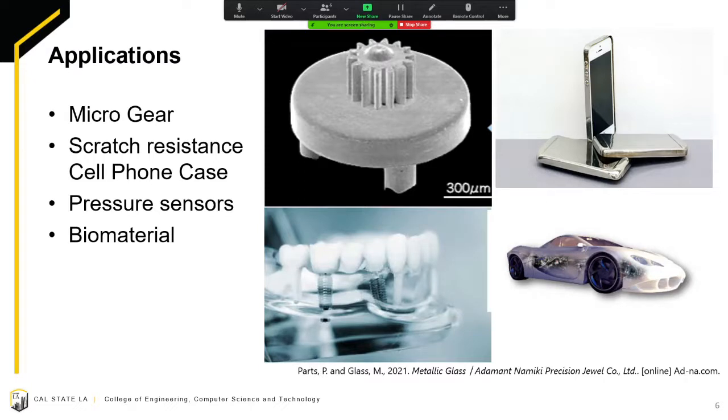Some applications of bulk metallic glasses are that they can be used to make surgical equipment, cast micro gears, make pressure sensors in cars as well as artificial joints, and space shuttle shielding for re-entry into the atmosphere.